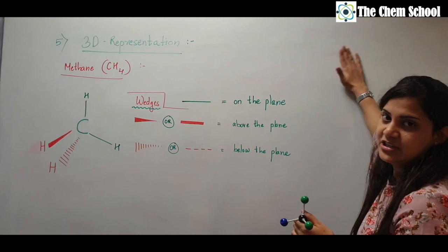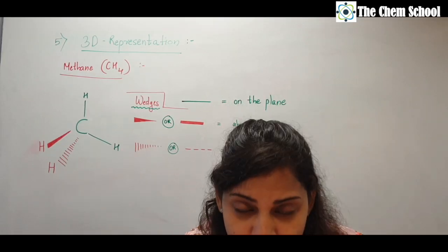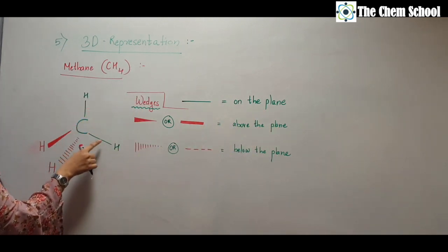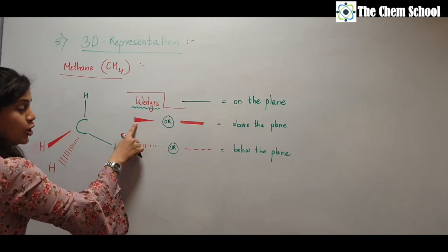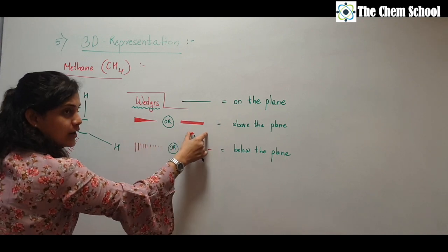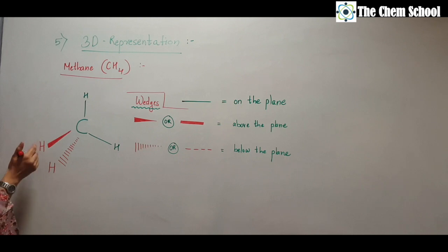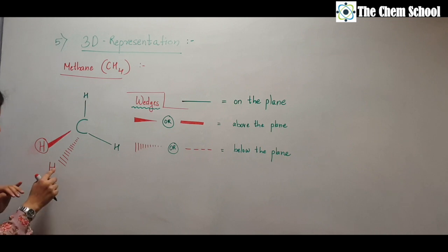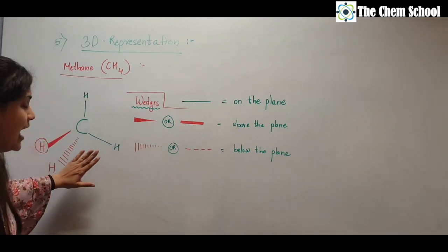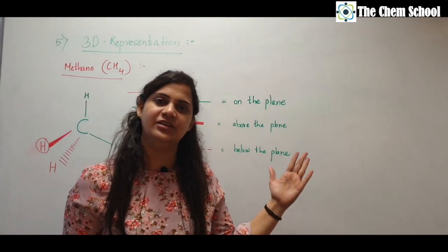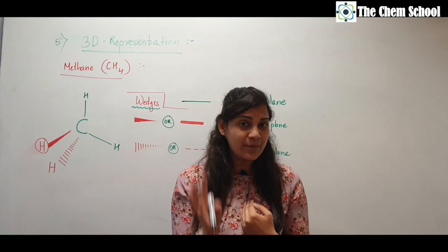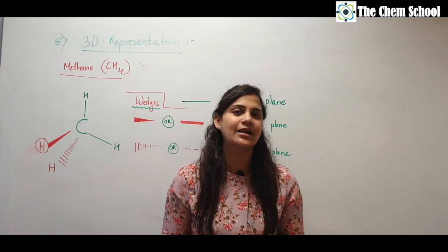The conventions are: a straight line means the bond is on the plane; a solid wedge (filled triangle) means the bond is above the plane, coming toward you; and a dashed wedge (dotted line) means the bond is below the plane, going away. So in the 3D structure of methane, two bonds are straight lines (on plane), one is a solid wedge (above plane), and one is a dashed wedge (below plane). We will discuss 3D structures more when we cover isomerism.